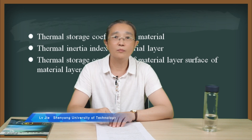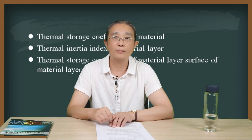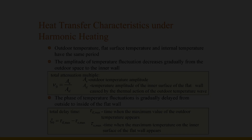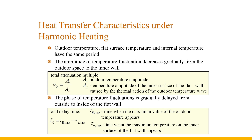When the external thermal effect changes with time, the internal temperature and heat flux of the enclosure structure will change, and this heat transfer process is called unsteady heat transfer. When the external thermal effect changes periodically with time, it is called periodic unsteady heat transfer. Thermal natural ventilation rooms and air conditioning rooms belong to this situation.